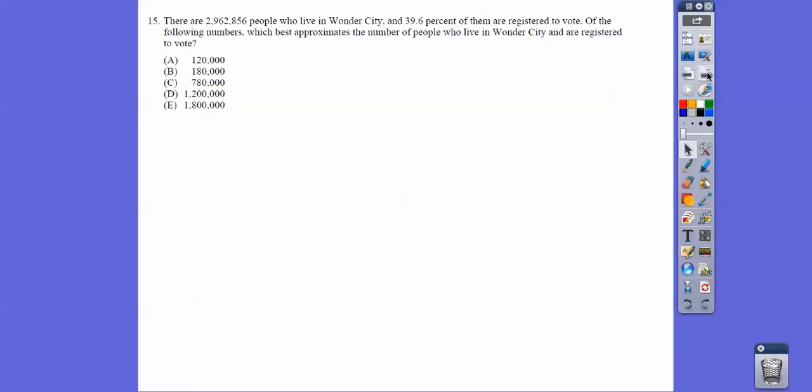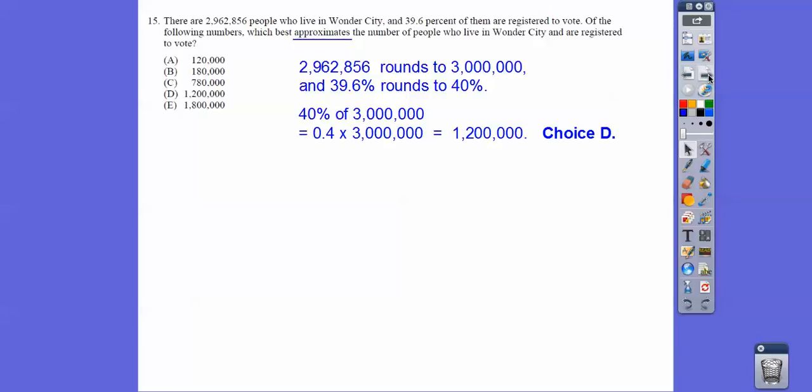All right, there are 2,962,856 people who live in Wonder City. And 39.6 - this sure smells like approximate right here. So 39.6% of them are registered to vote. Which best approximates the number? So I'm going to approximate this to 3 million and approximate this to 40%. So we're going to look for 40% of 3 million, and we get 12 million.